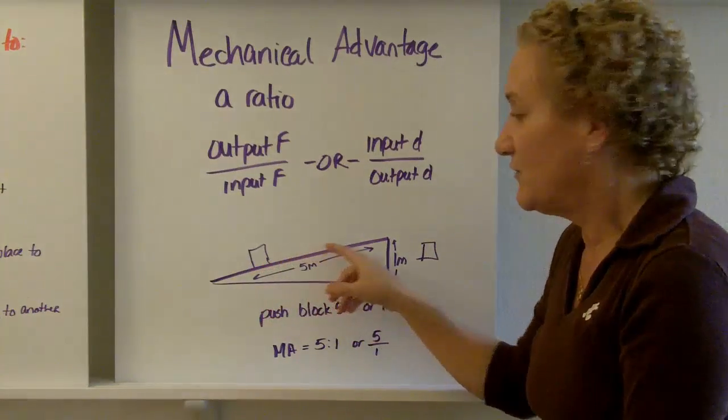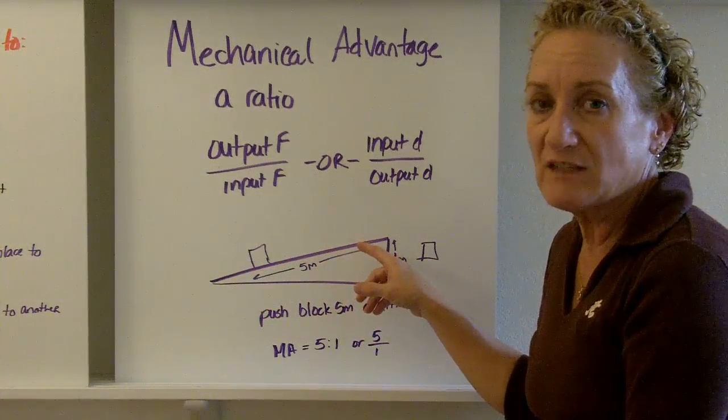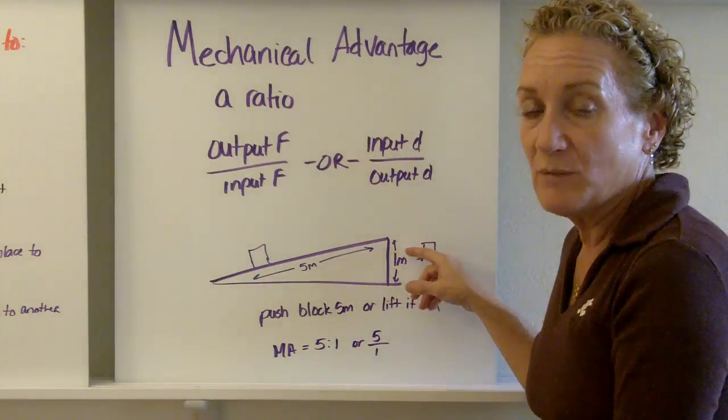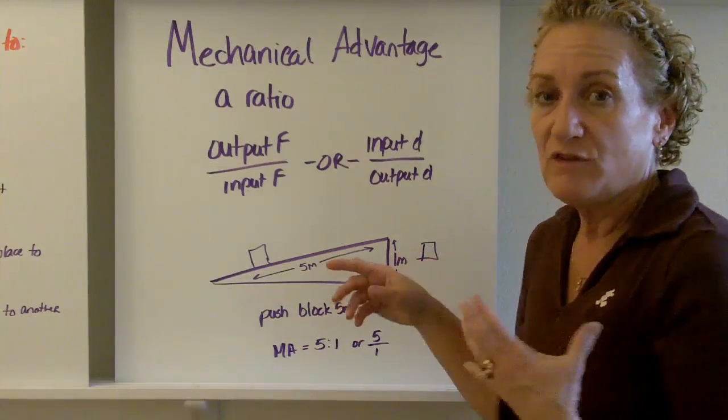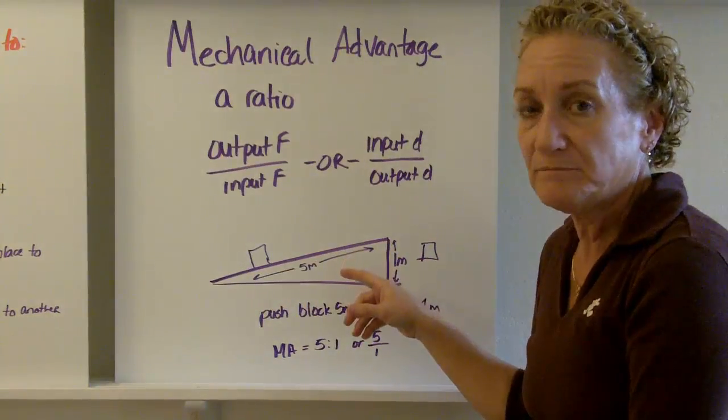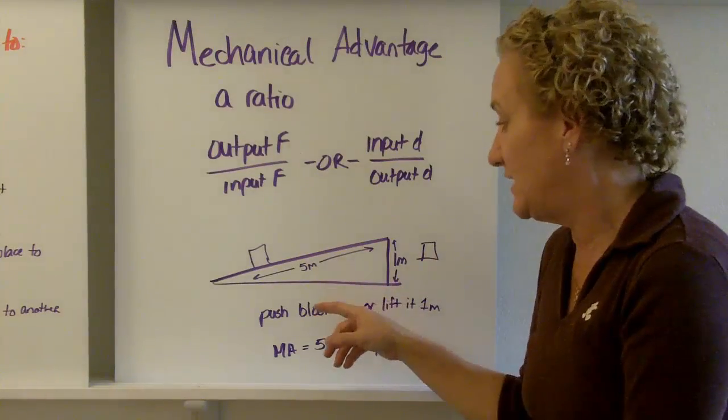You have an option. You can slide this very, very massive block up a 5 meter ramp, or you can try to lift it 1 meter straight up. Well, if you're trying to do things easier, you're probably going to slide it up that ramp. Mechanical advantage is the distance.